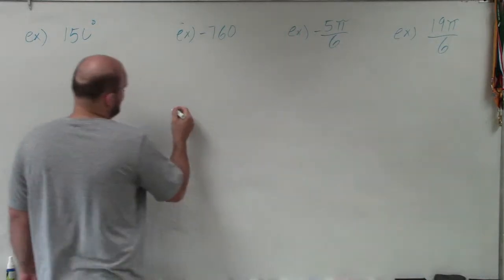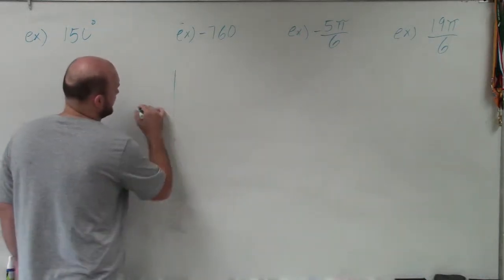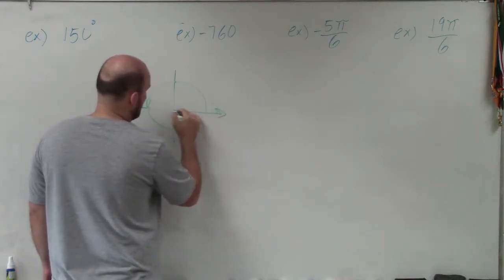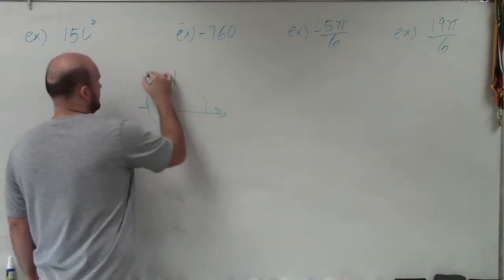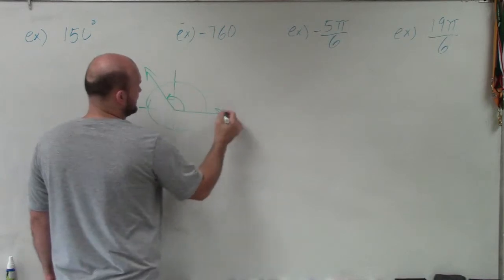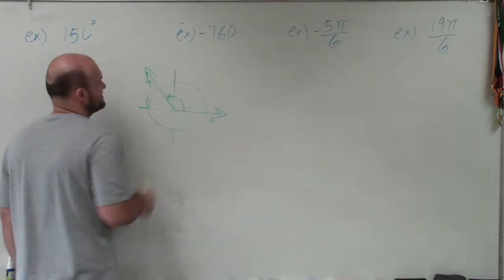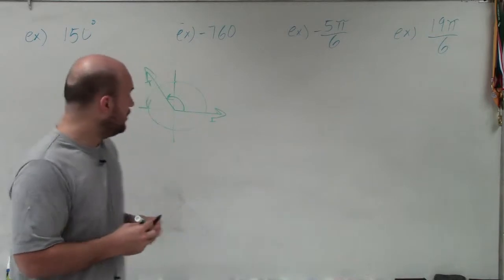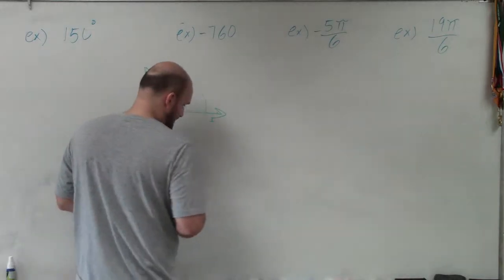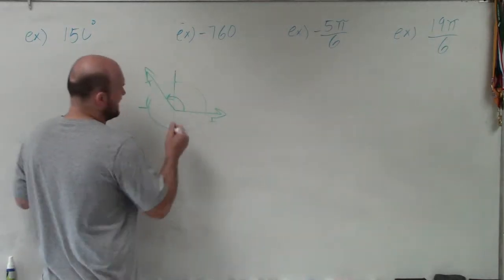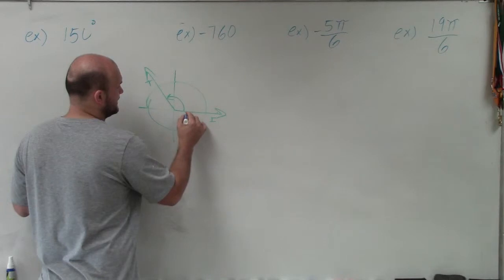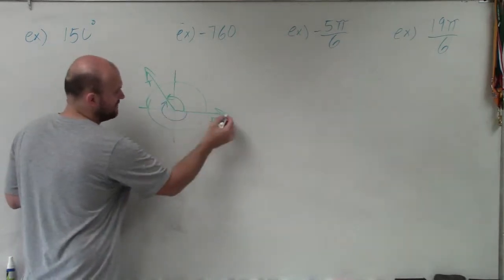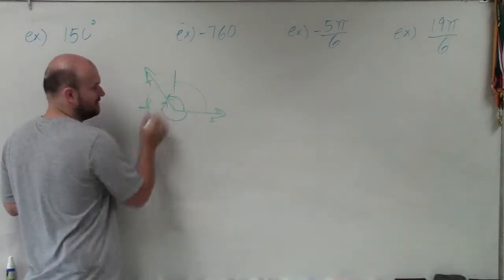Let's go through an example. So if I had this angle here, you can see here's my initial side and here's my terminal side — it looks like maybe 3 pi over 4 or something like that. If I wanted to find a coterminal angle, what I could do is I could go in the negative direction, and you can see I still have the initial and I still have the terminal side.